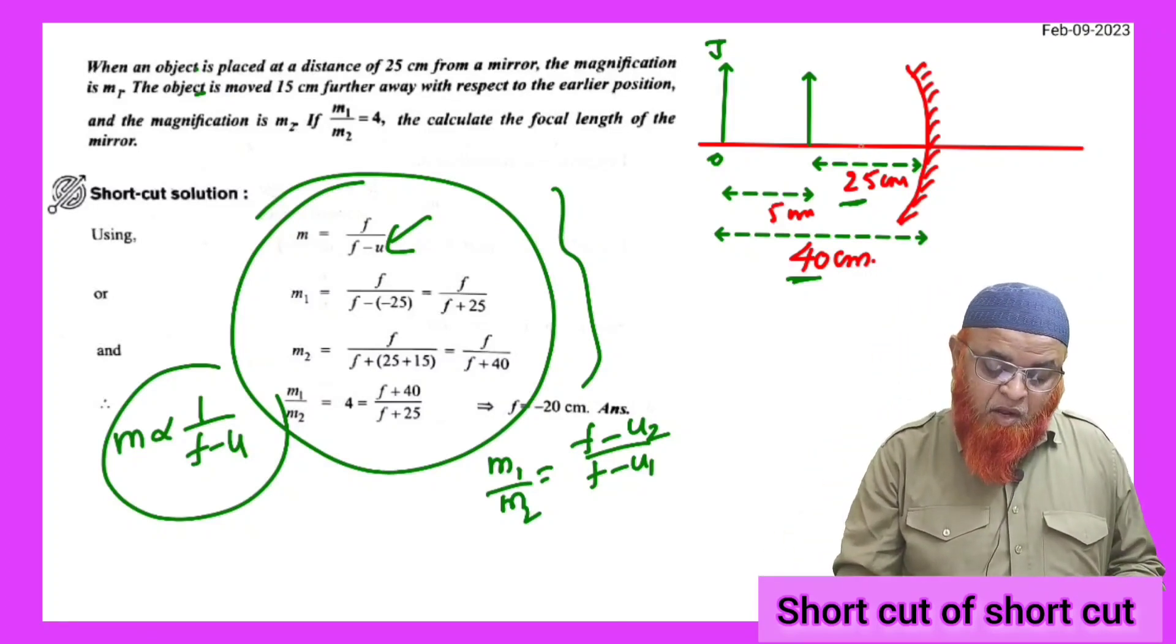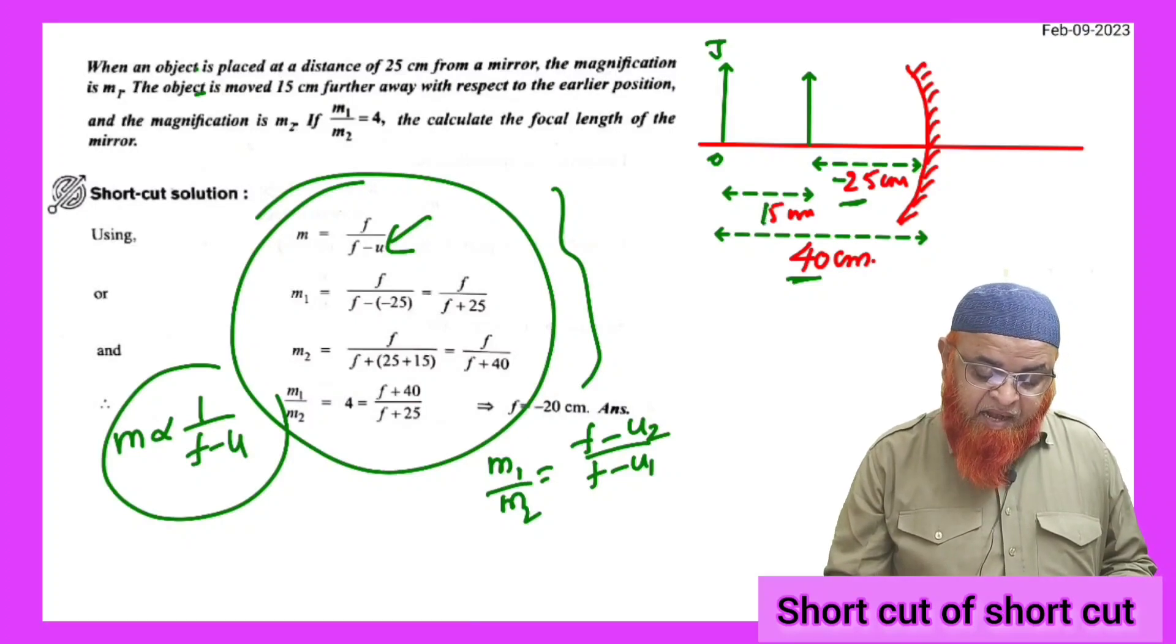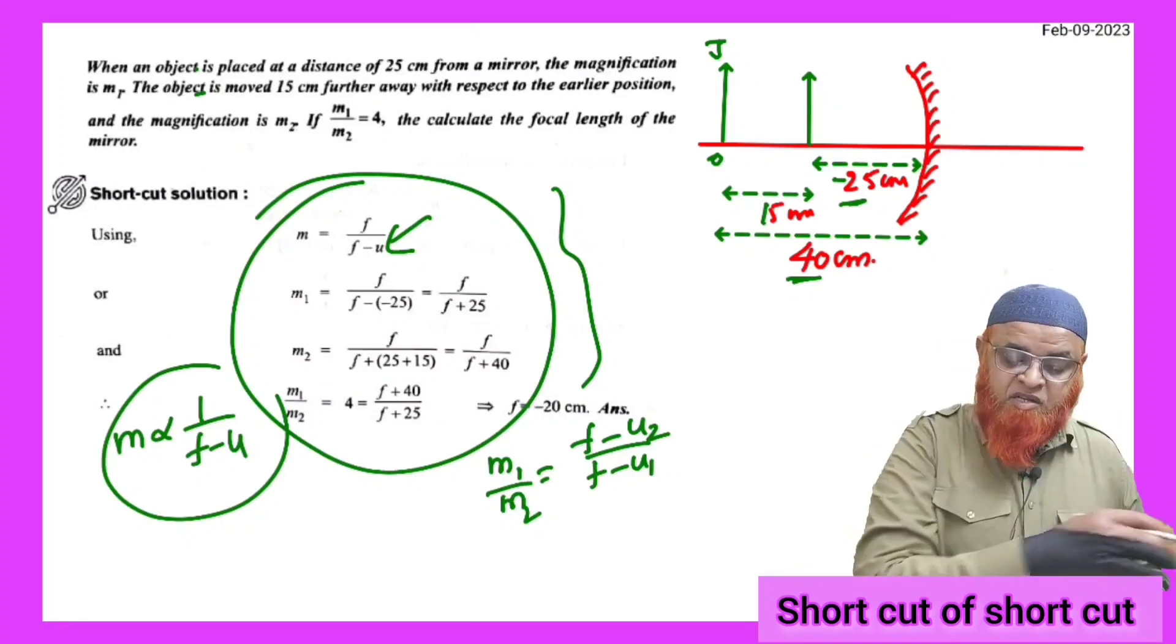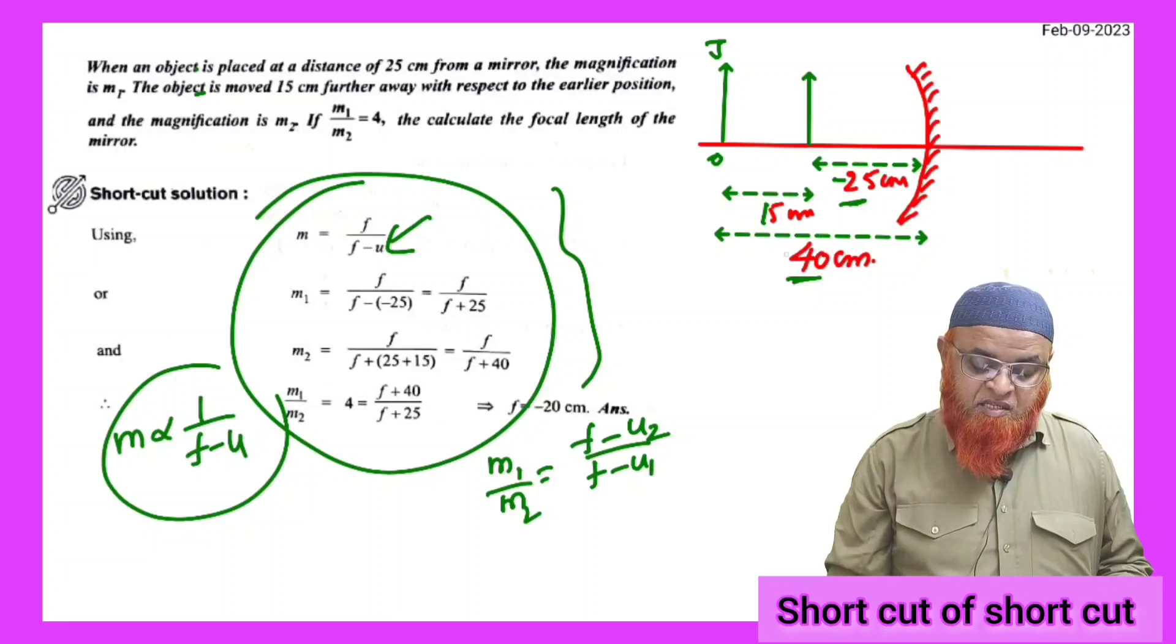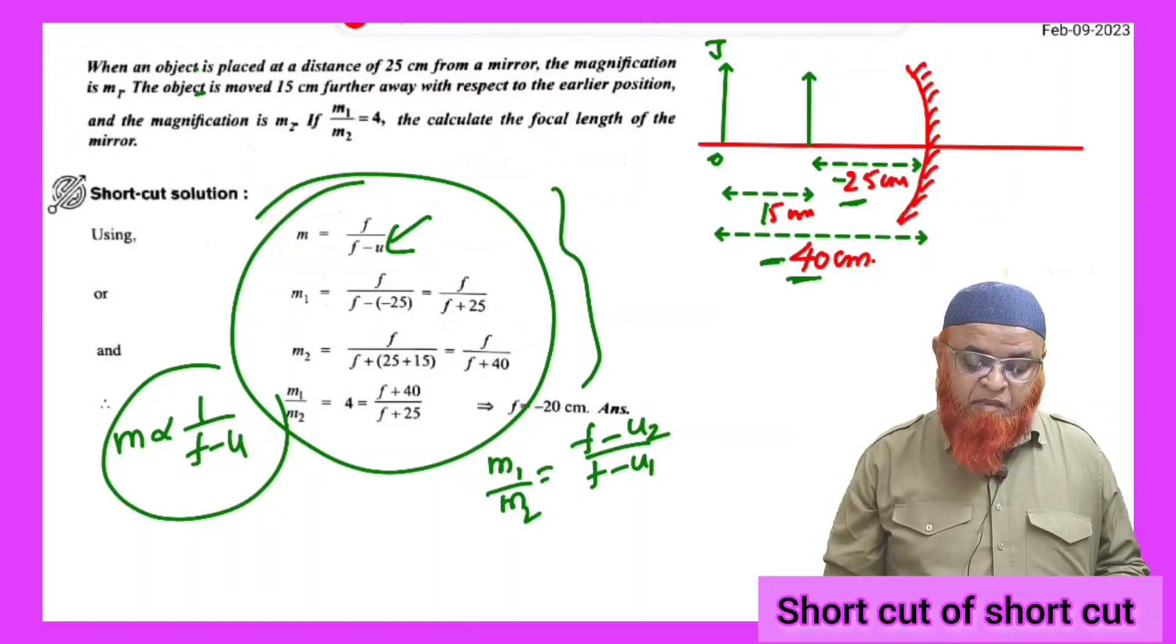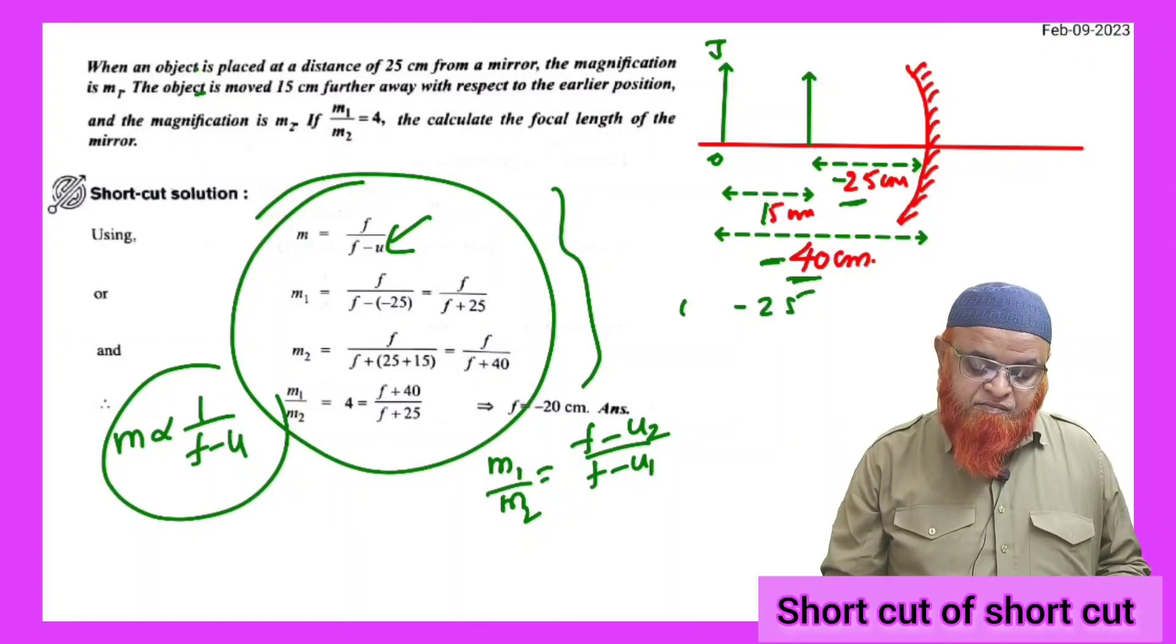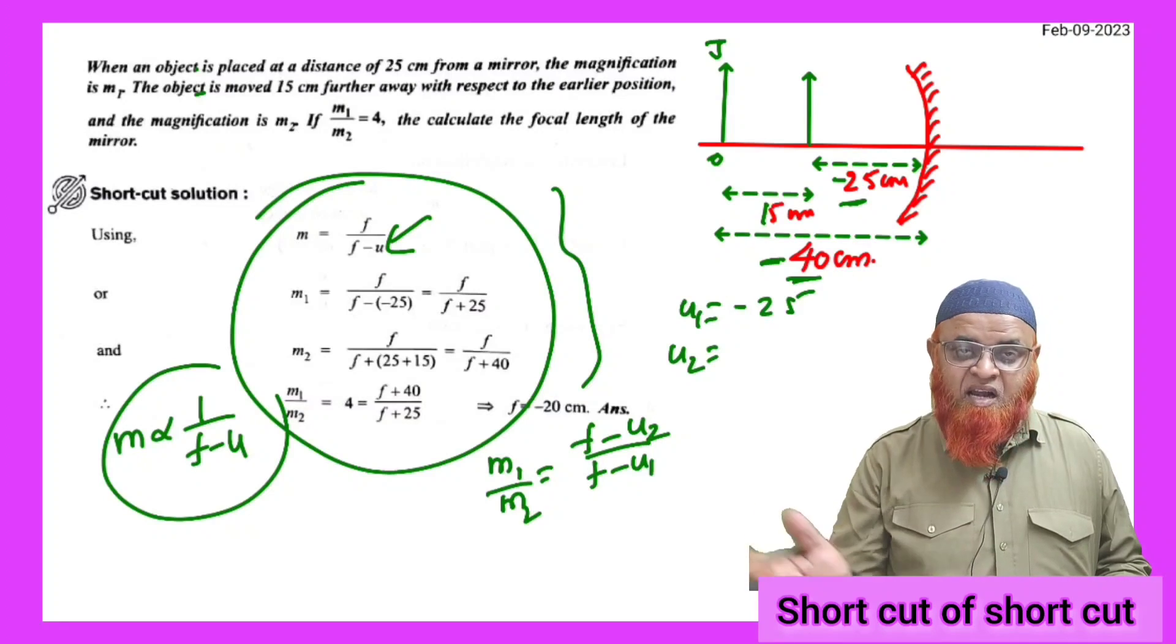As you know that in this problem, first object was placed at minus 25 centimeters and it has been shifted minus 15 centimeters left. 25 minus 15, 25 plus 15 is going to be 40. I am taking minus 40 here. Previously it was minus 25 as U1.